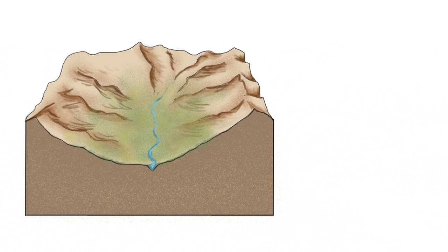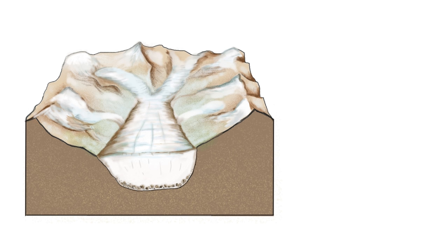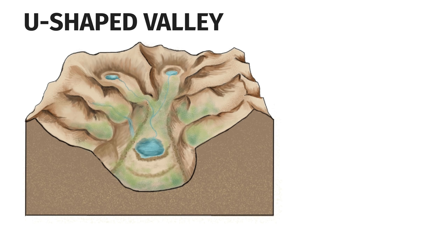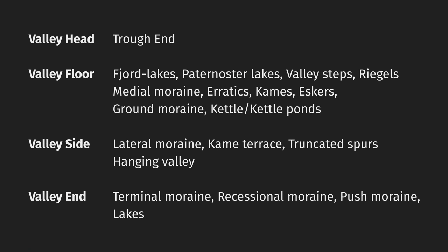The various types of valley glacier — regular, hanging, piedmont, et cetera — will leave behind deep glacial troughs known as U-shaped valleys. U-shaped valleys may be several hundreds of meters deep and tens of kilometers long, and may be host to a wide variety of landforms.